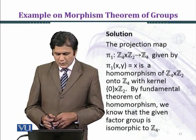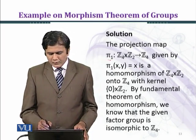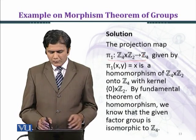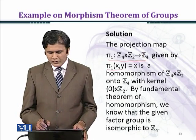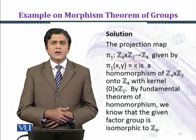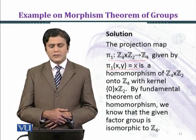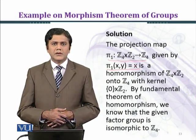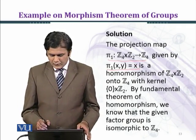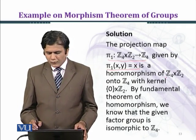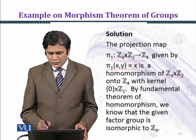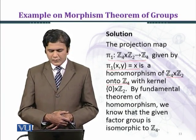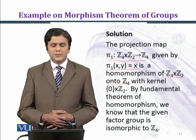The projection map pi1 from Z4 cross Z2 to Z4 is given by pi1(x, y) equal to x. This first coordinates map is a homomorphism of Z4 cross Z2 onto Z4. Very easily you can verify that pi1(x, y) equal to x is indeed a homomorphism.